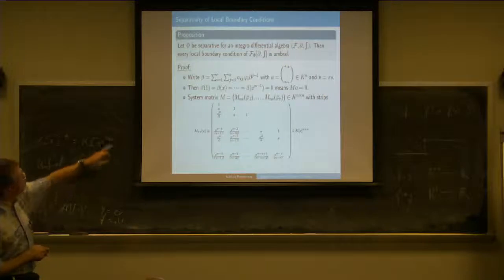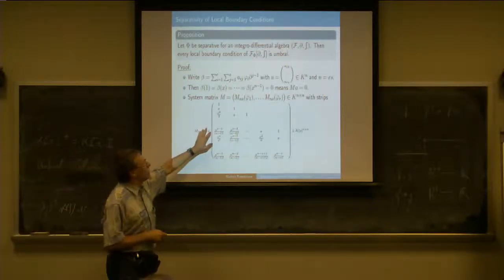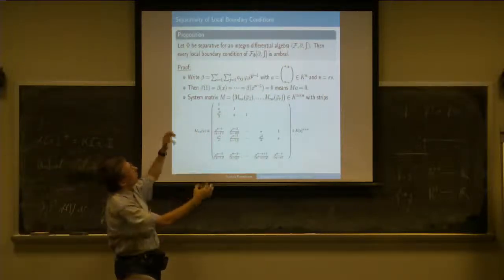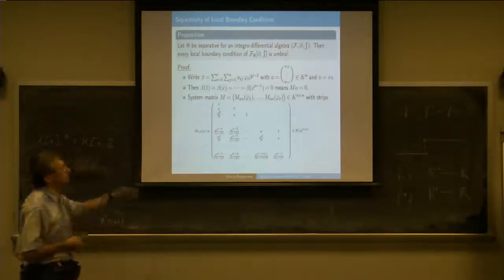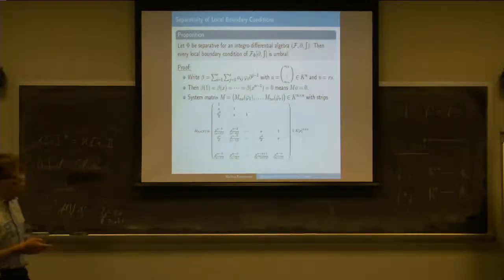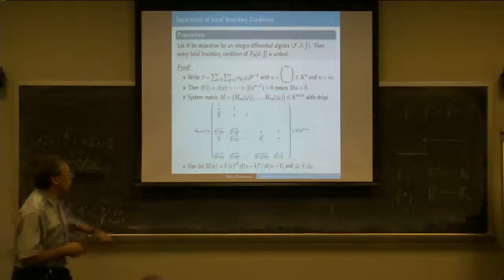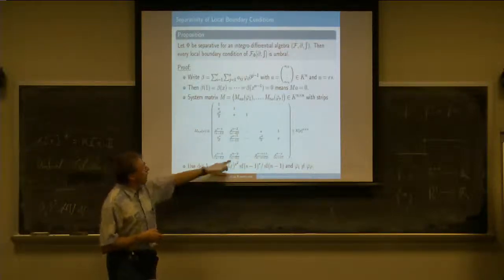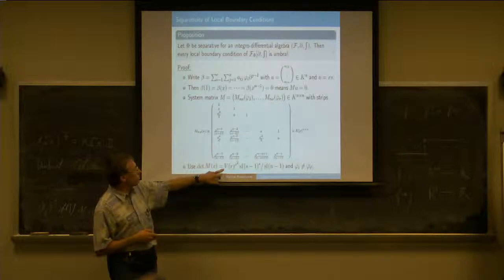The proof boils down to looking at this kind of determinant that you get by looking at the successive powers, which is a bit similar to a fundamental determinant. It has as its value a power of the fundamental determinant. So this V here is the fundamental raised to this power, and SF is the superfactorial.